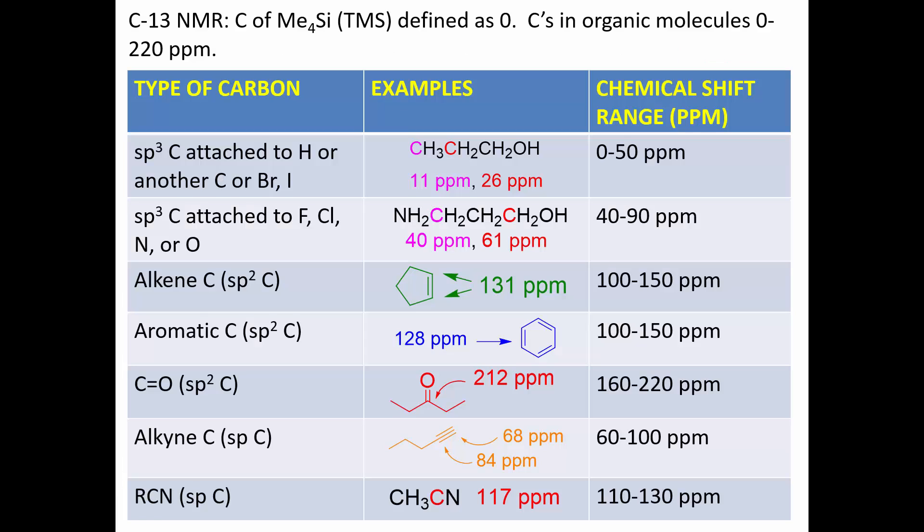Our typical C-13 spectrum uses the same reference compound as proton spectra: tetramethylsilane, defined as zero. Carbons in organic molecules typically come between zero and 220 parts per million. The same factors that affected proton chemical shifts affect C-13 chemical shifts: electronegativity has a big influence, as does hybridization.